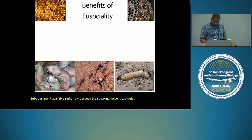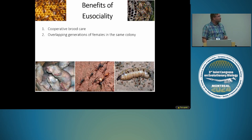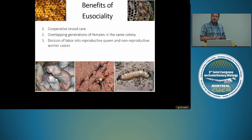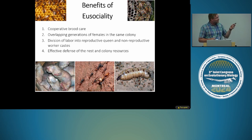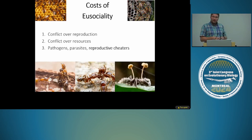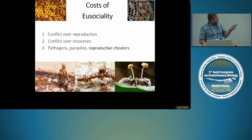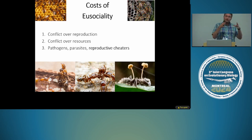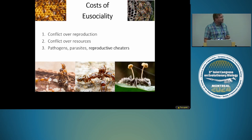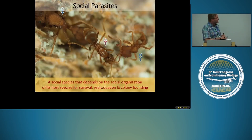Ants evolved eusociality, and the evolution of social behavior fascinates many evolutionary biologists. The benefits of eusociality include cooperative brood care, overlapping generations of females in the same colony, and the division of labor into a reproductive queen and a non-reproductive worker caste, leading to active defense of the nest and colony resources. However, eusociality also has significant costs: conflict over reproduction, conflict over resources, susceptibility to pathogens and parasites, and reproductive cheaters — which I would like to focus on today.